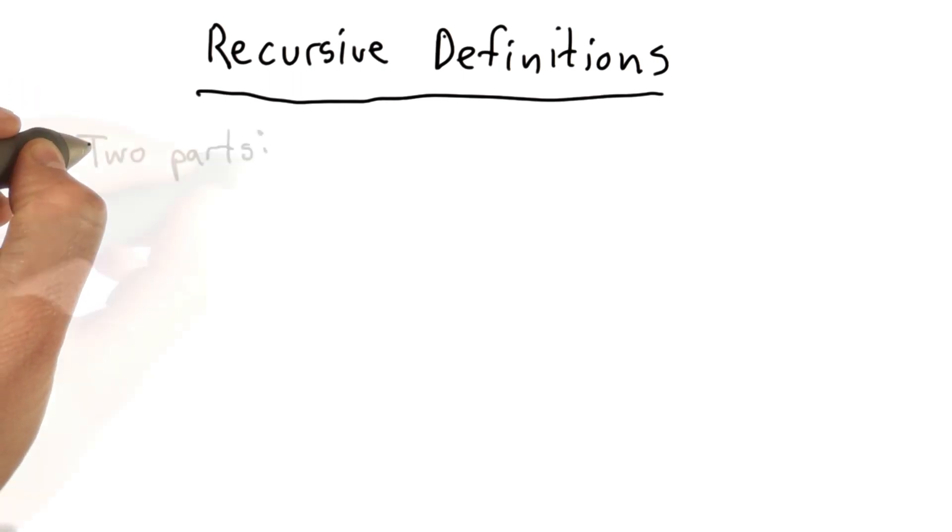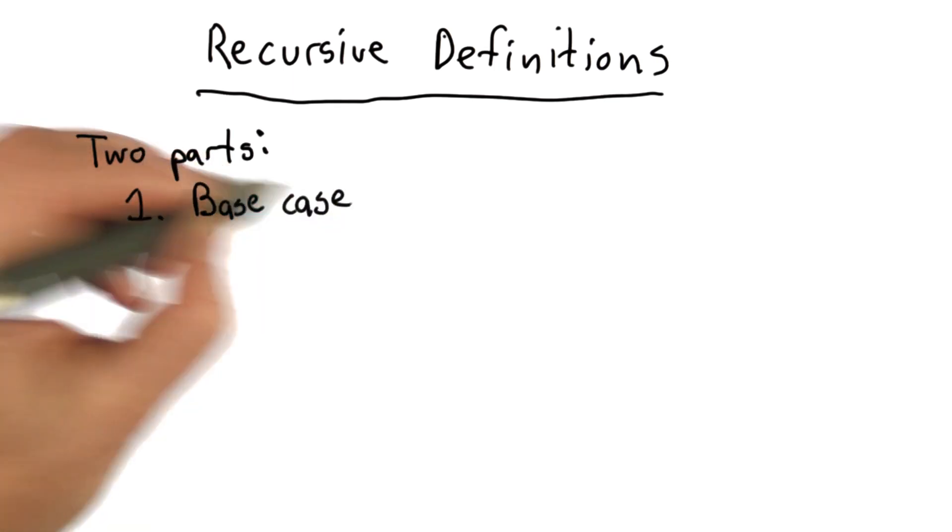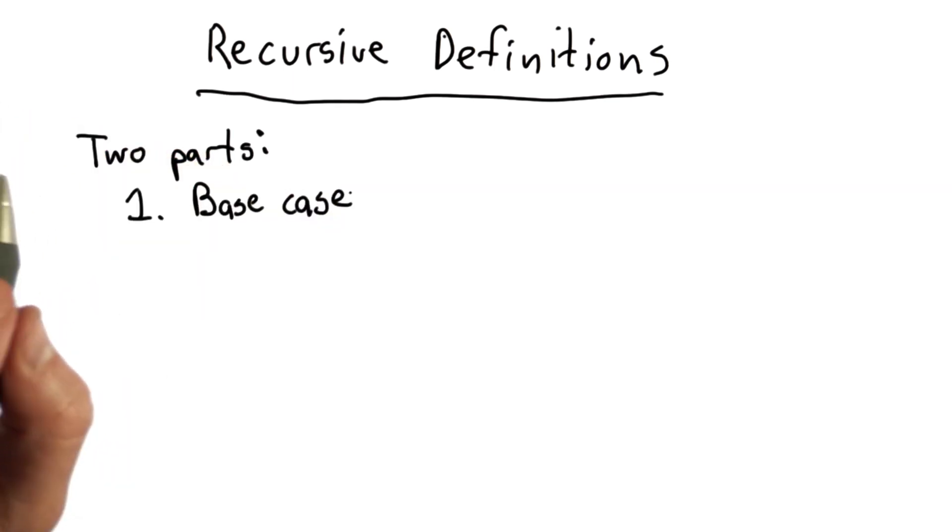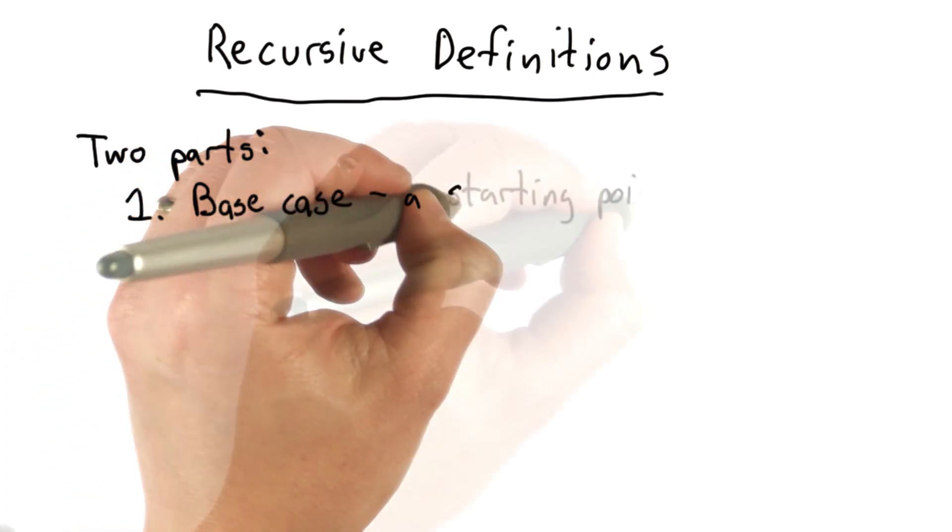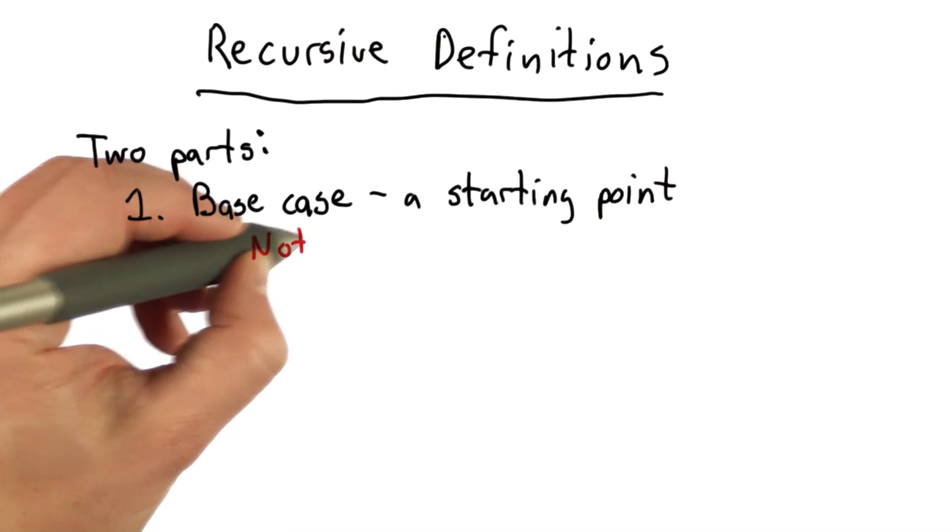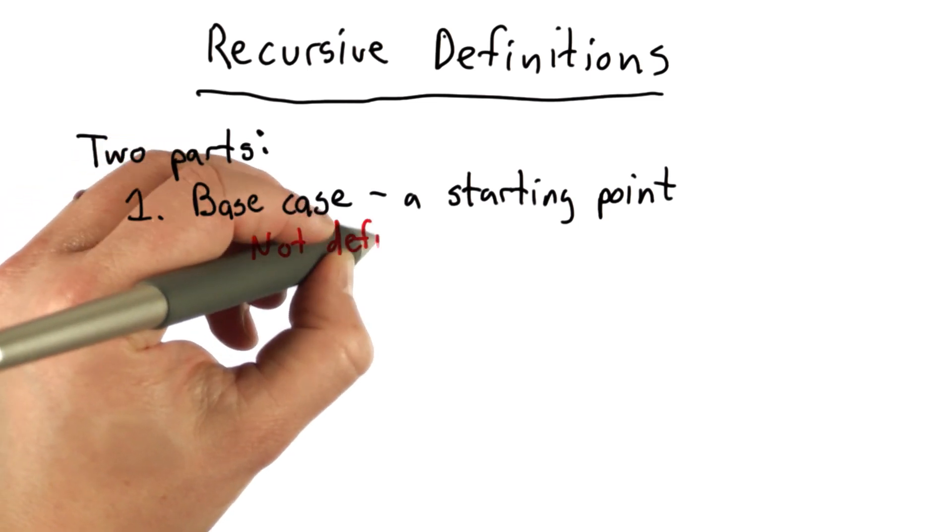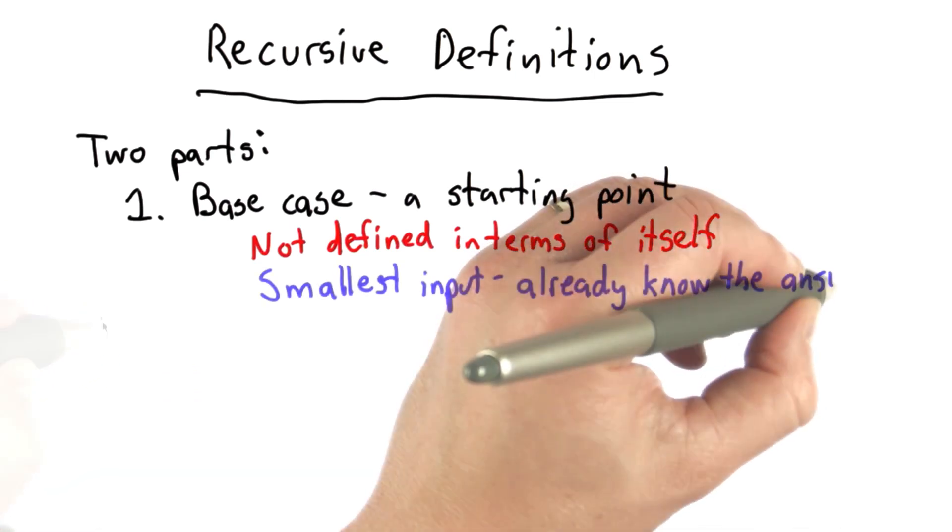And a recursive definition has two parts. It has the base case. In our example with the word, that was the second rule. And the base case, we can think of it as a starting point. And the important thing about the base case is it's not defined in terms of itself. It has to be something where we already know how to define it.